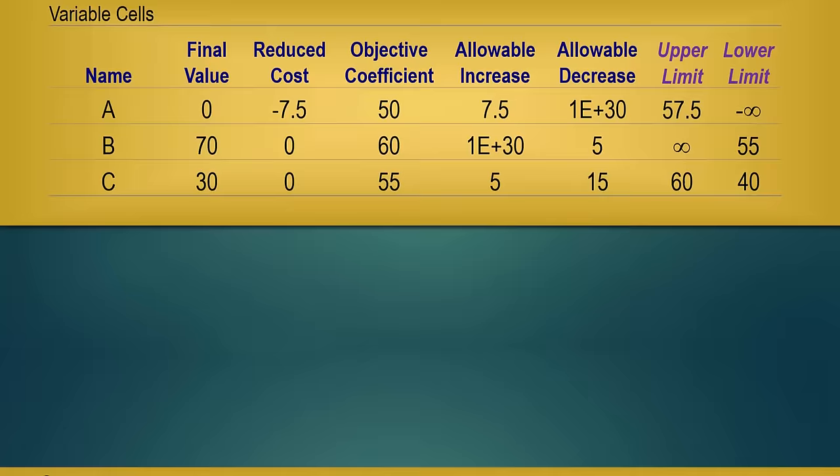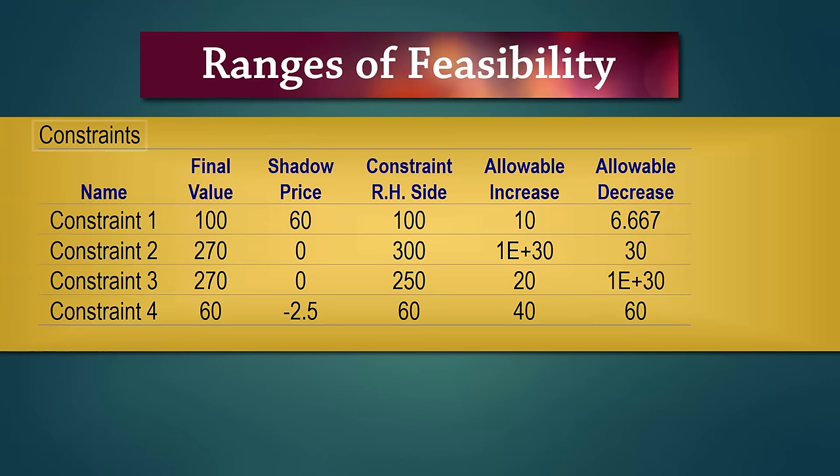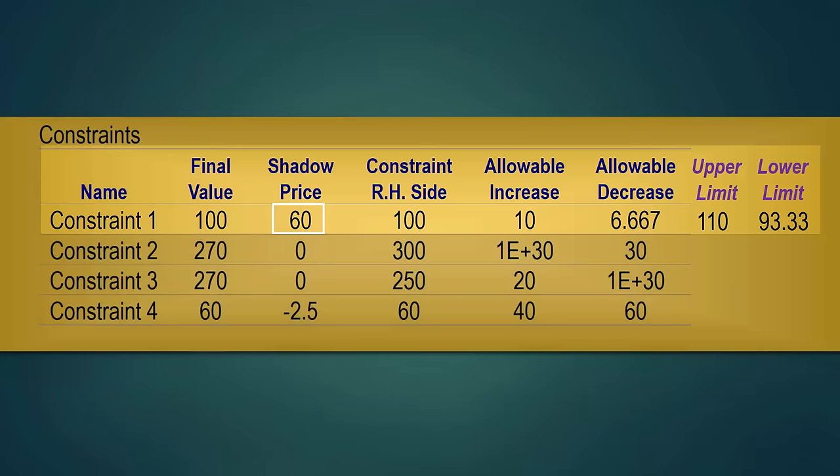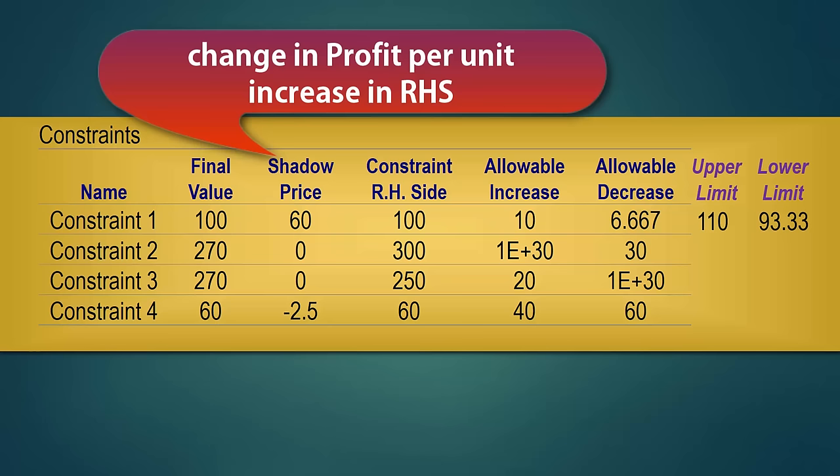Now the bottom part of the table titled Constraints addresses the range of feasibility. That is the range for the right hand side of a constraint where the shadow price remains unchanged. For example, as long as the right hand side of Constraint 1 is between 93.33 and 110, the shadow price of 60 will apply. Shadow price here refers to the amount of change in the optimal objective function value per unit increase in the right hand side of a constraint.